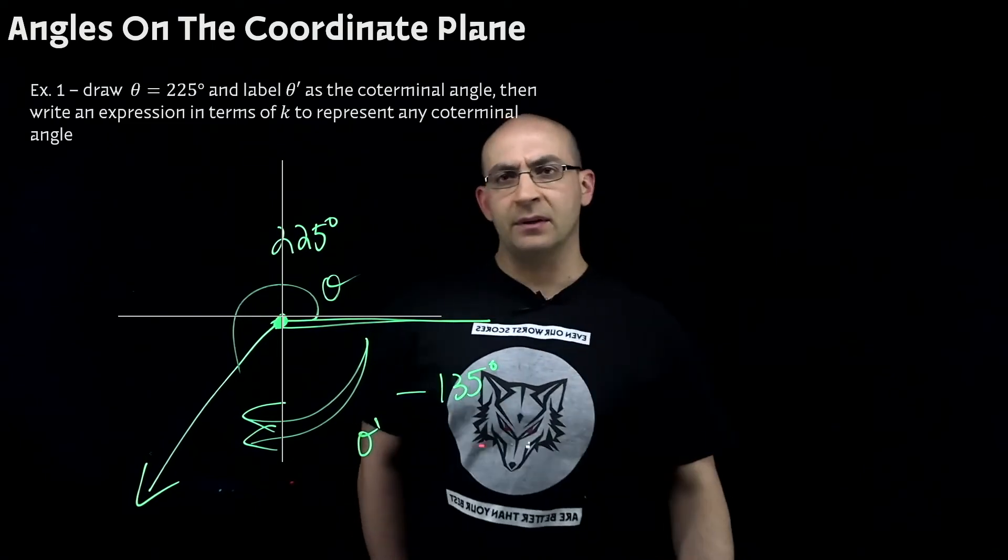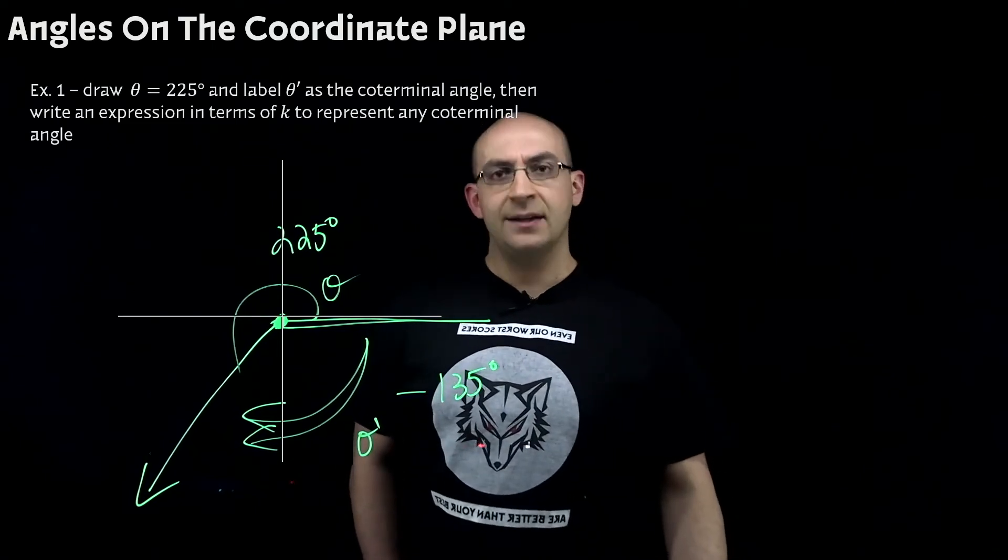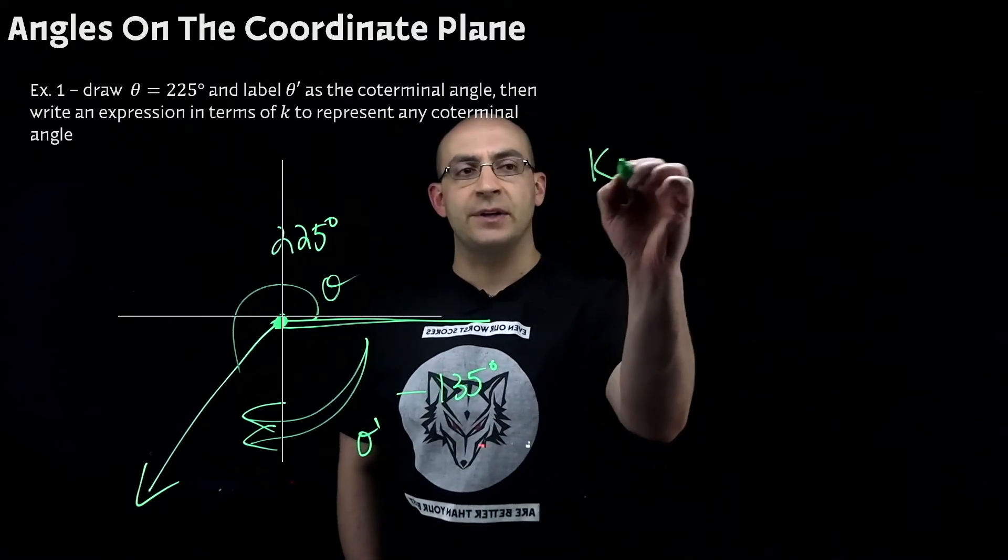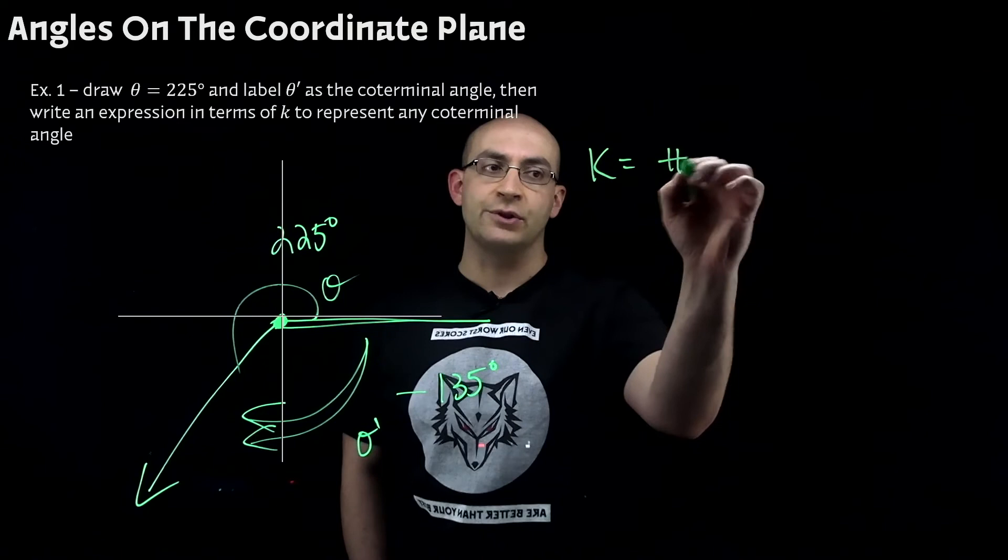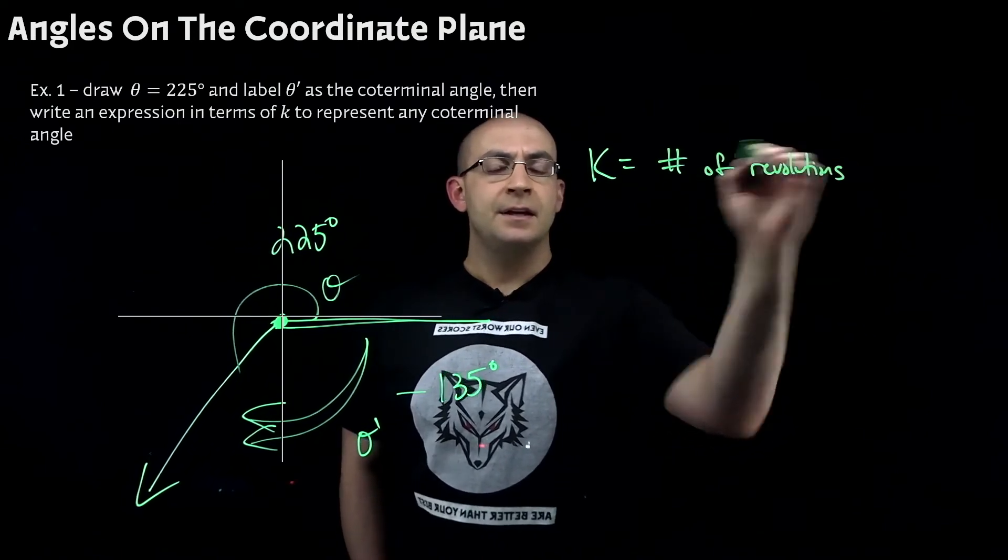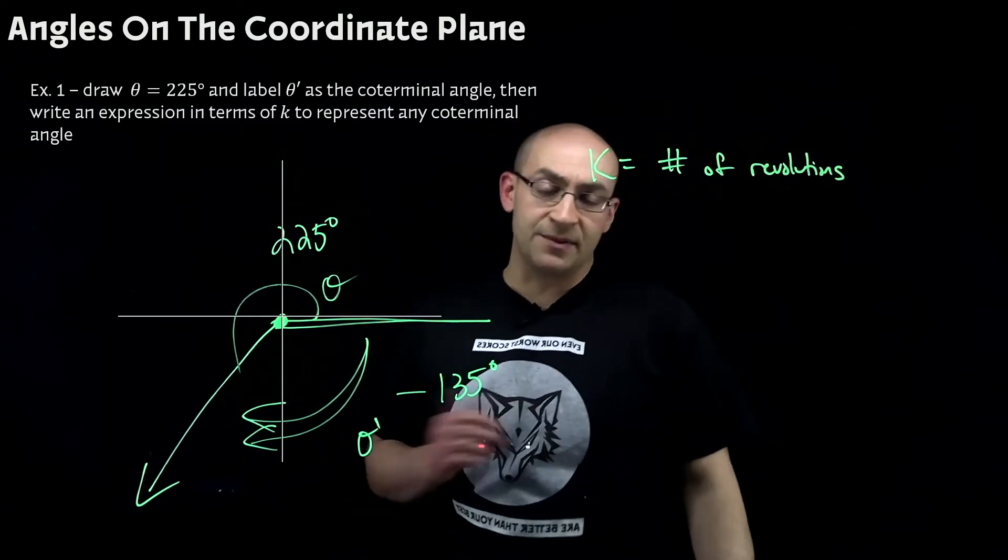Now what about this second part, write an expression in terms of K to represent any coterminal angle. Well, K is going to be something special here and it's going to represent our number of revolutions.